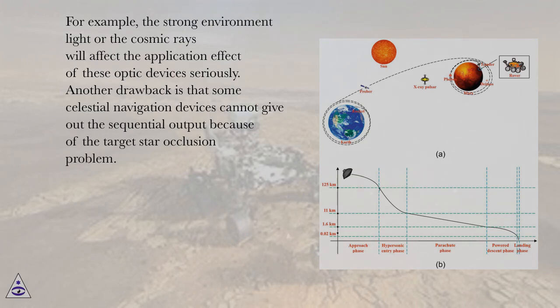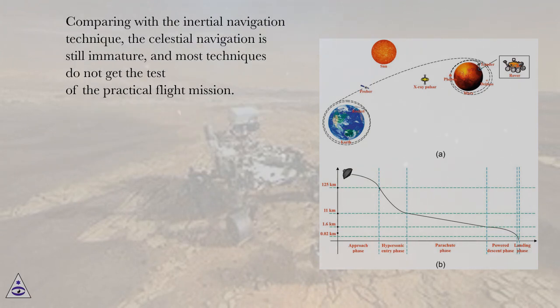Another drawback is that some celestial navigation devices cannot give out the sequential output because of the target star occlusion problem. Comparing with the inertial navigation technique, the celestial navigation is still immature, and most techniques do not get the test of the practical flight mission.